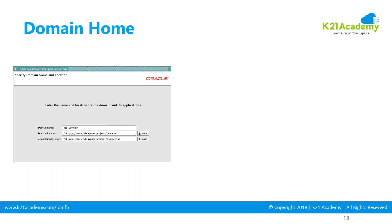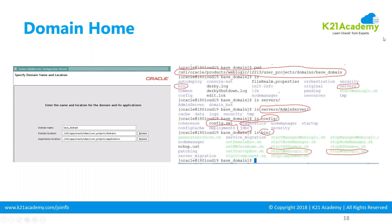So when does this Domain Home get created? Domain Home gets created when you configure a WebLogic domain. How do you configure a WebLogic domain? You configure it when you run config.sh. We'll see in this module how you run or create a WebLogic domain. Domain Home contains the top-level directory in which you have all the files, and that's what you see on the right-hand side.